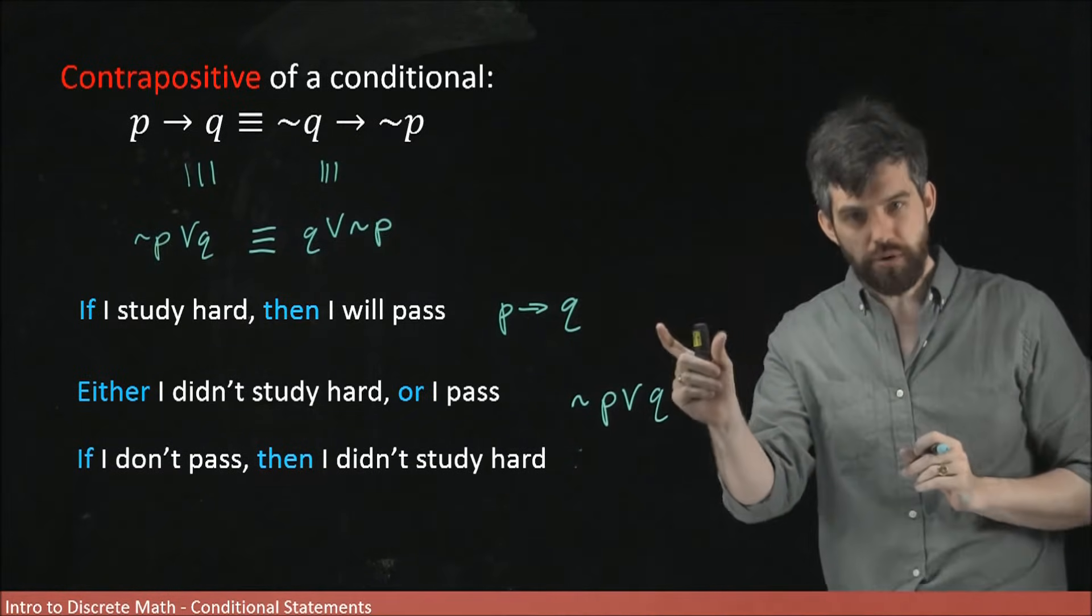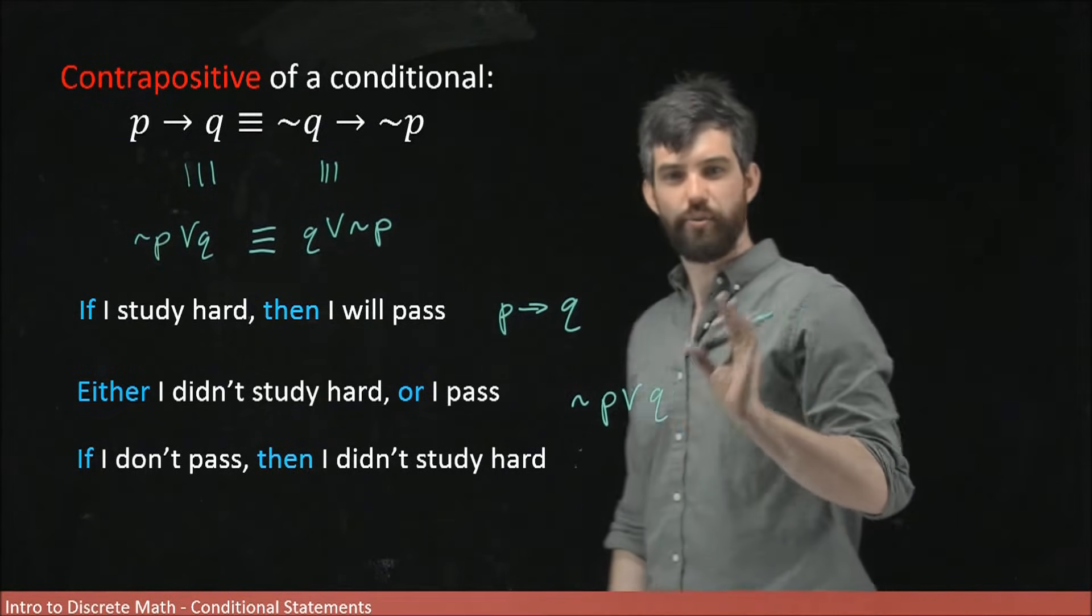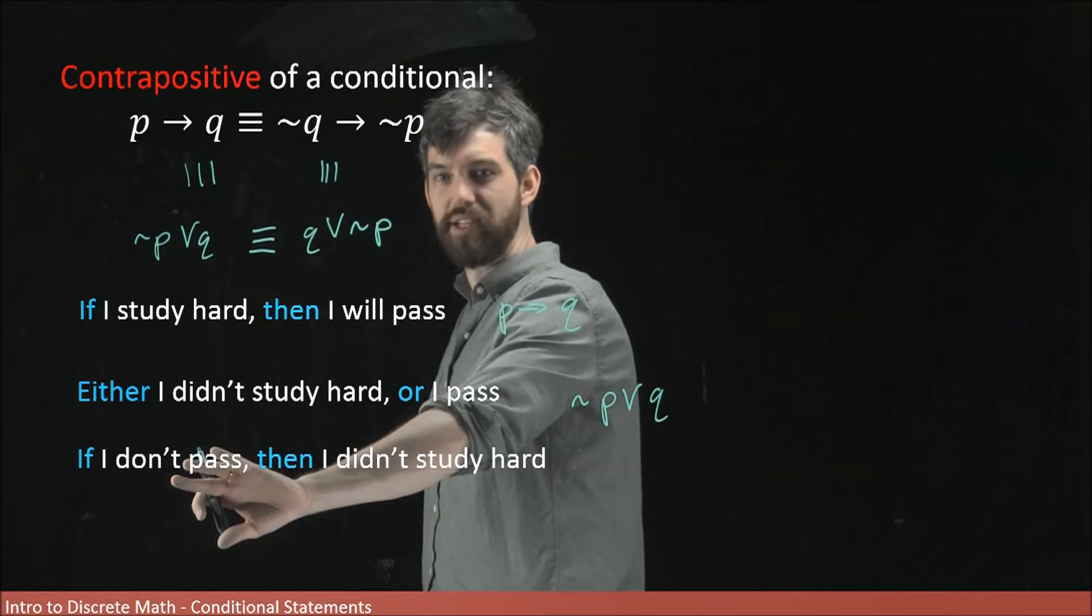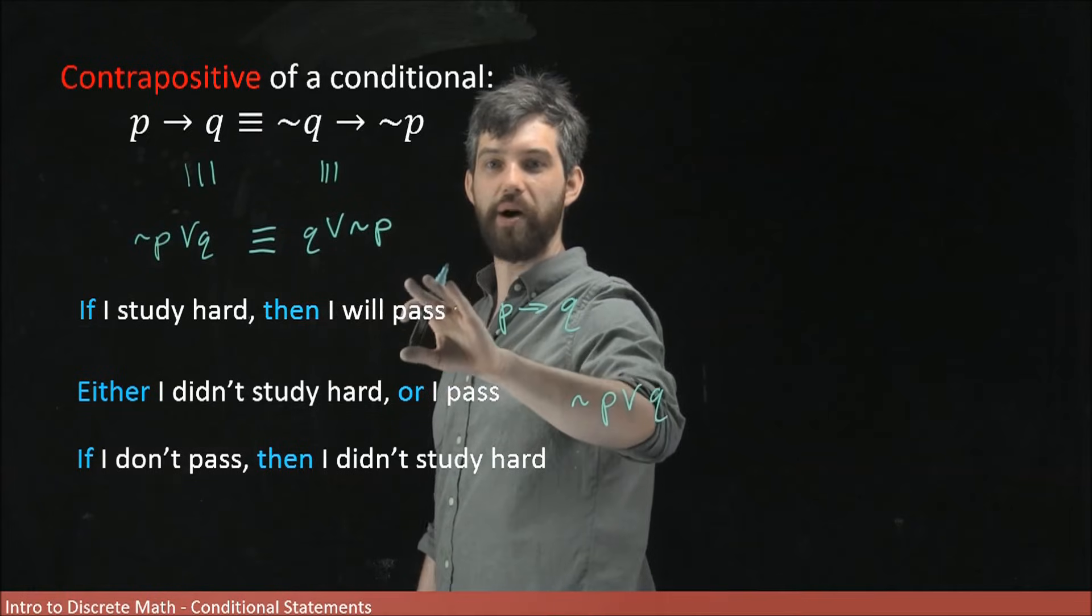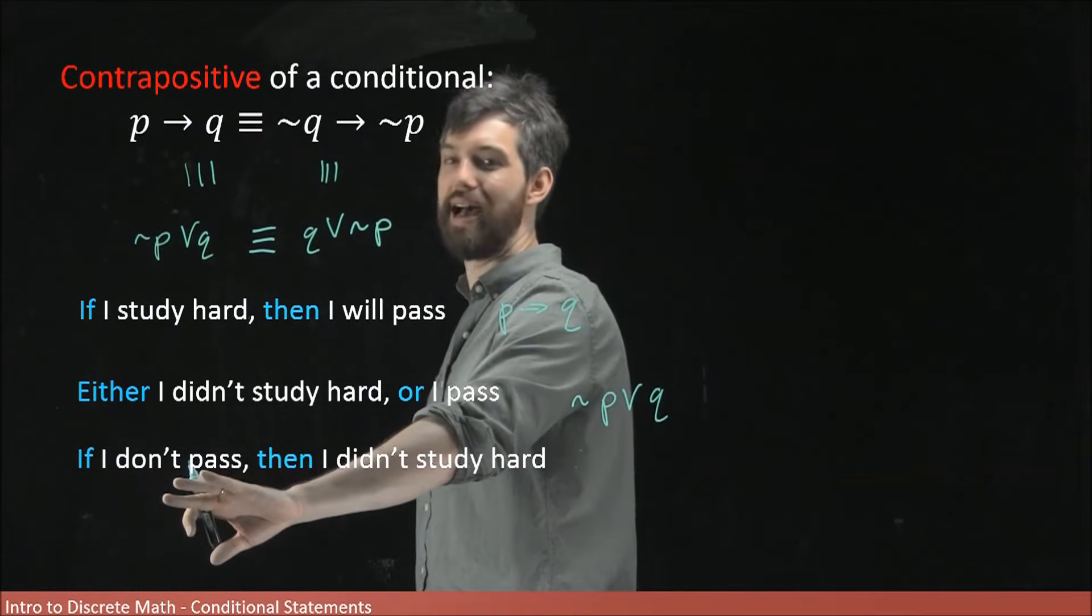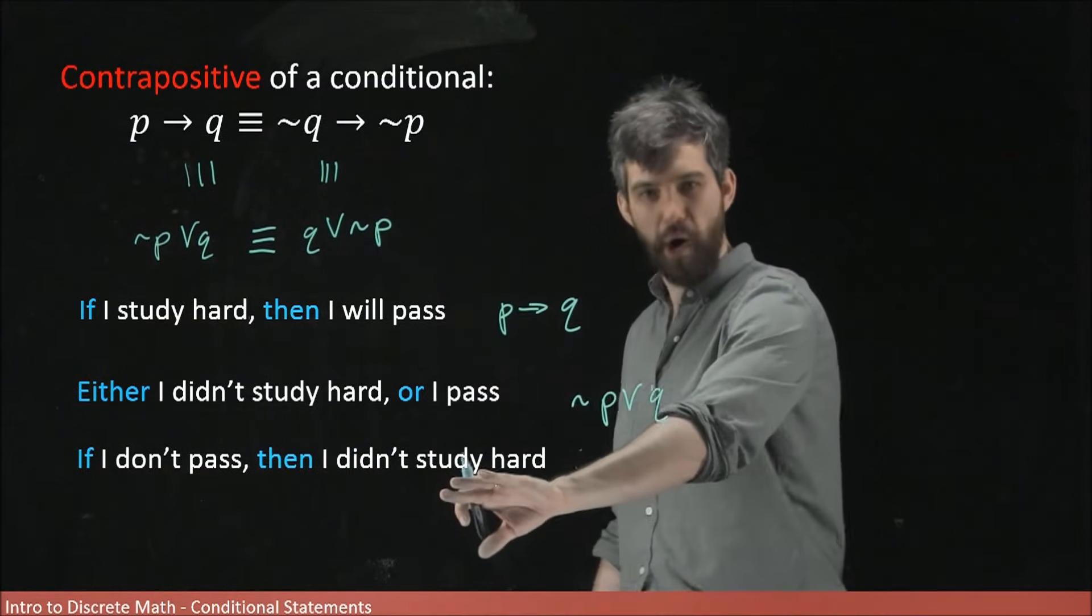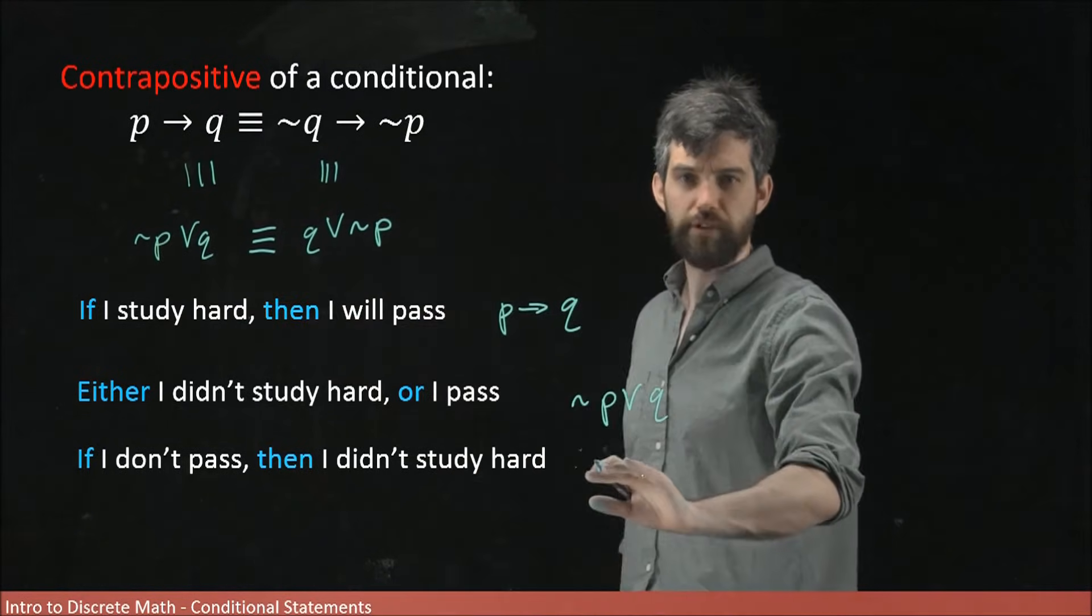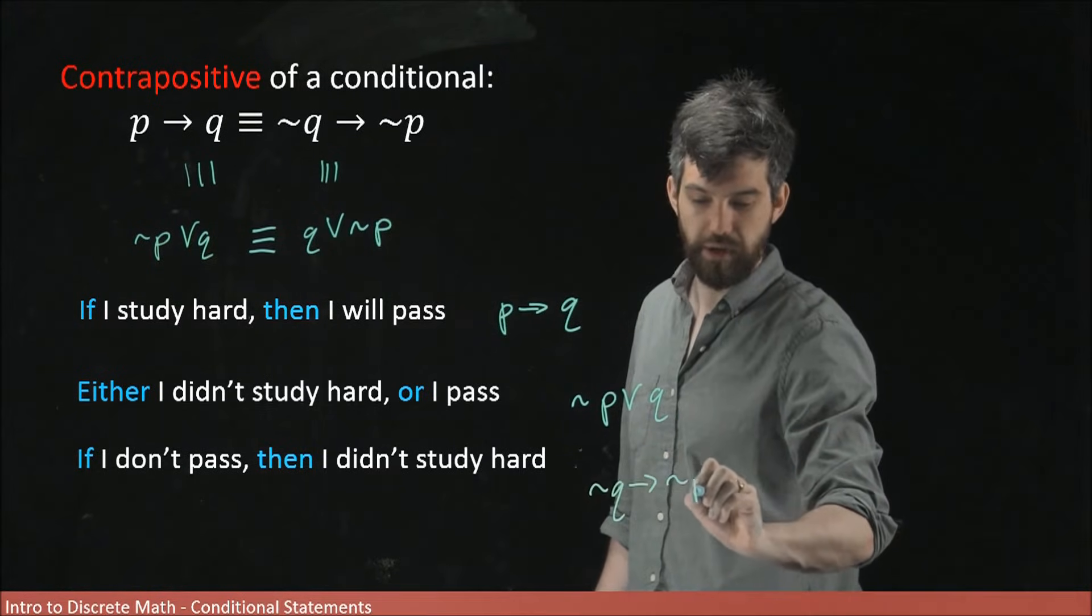If I don't pass, then I didn't study hard. And the reason why this works is the I don't pass portion of it. So I don't pass is negating I pass. So when I talk about I will pass, if I negate that, it says I will not pass. And except for the tense issue, I don't pass. Likewise, I didn't study hard is negating I study hard. So what we have down here is a not Q implies not P.